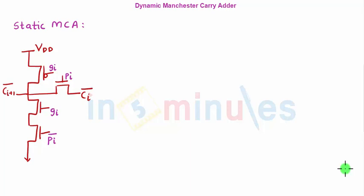In the previous clip we have already seen a static Manchester carry adder. The circuit is already present on the screen where we saw different cases and identified that just by using generate and propagate signals we could easily get the Cout functionality. The circuit was drawn keeping in mind that the pull-up uses a PMOS to produce a perfect 1 at the output, whereas the pull-down had series NMOS transistors which produced a 0. I connected a PMOS in the pull-up part with input GI, and the pull-down comprised two NMOS transistors — one with input GI and another with input PI bar — plus a pass transistor with gate input SPI passing CI bar.